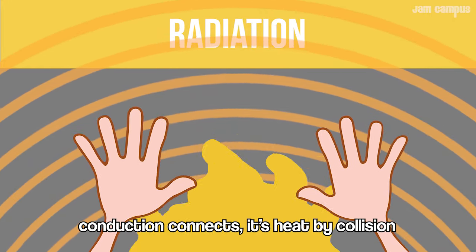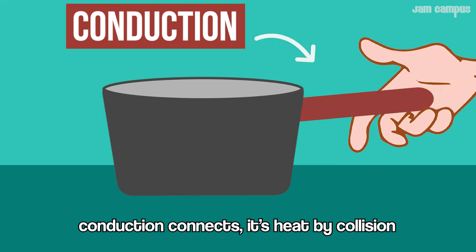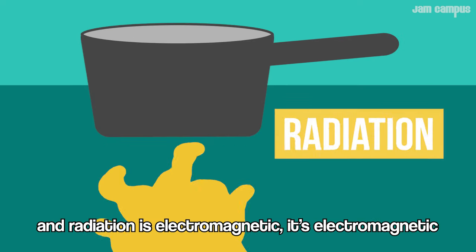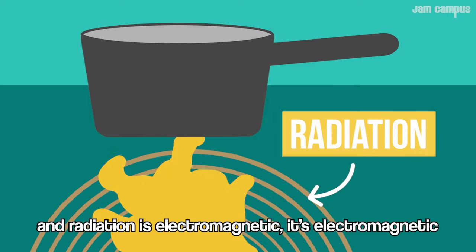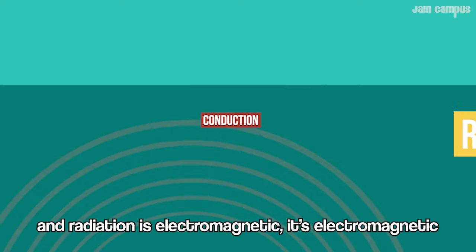High energy electrons fall down to lower energy levels; the energy is absorbed and electrons jump up. Conduction connects, it's heat by collision. Convection fluid, heat by fluid movement. And radiation is electromagnetic.